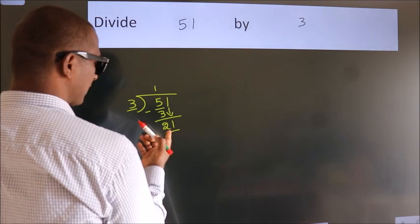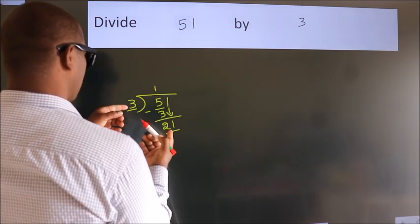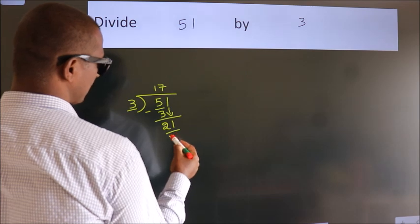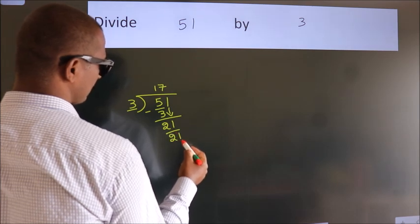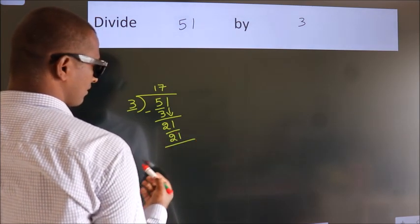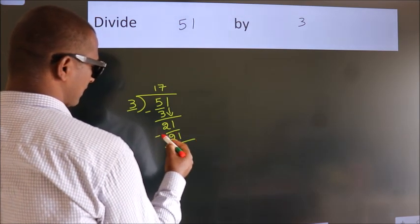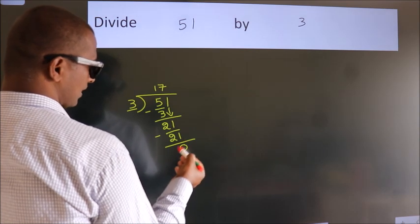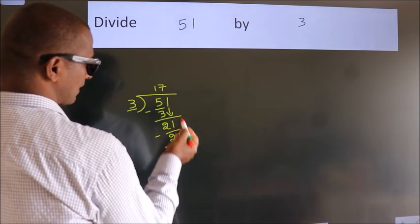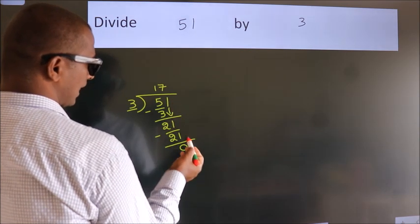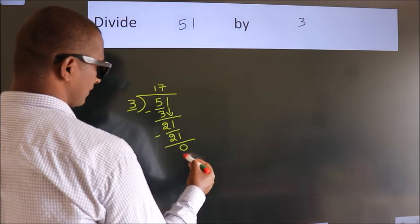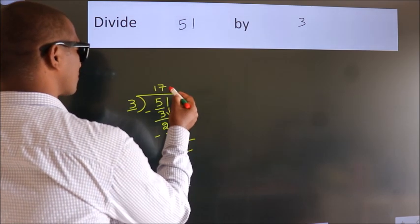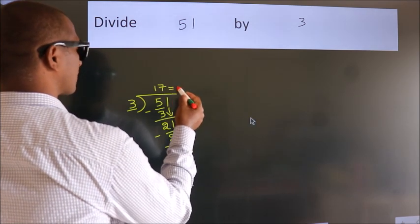When do we get 21 in the 3 table? 3 sevens are 21. Now we subtract — we get 0. After this, there are no more numbers to bring down and we got remainder 0. So this is our quotient.